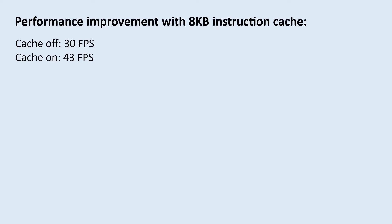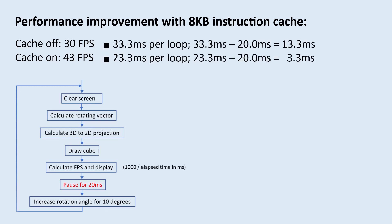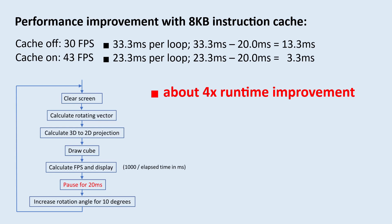Now we have two frames per second numbers: with the instruction cache off it's 30 FPS, and with it on it's 43 FPS. Before we just compare these two numbers, remember there is a 20-millisecond pause per frame that we need to subtract when evaluating the runtime. After that correction, for this trial run it's about a 4x runtime improvement with this 8 kilobytes of instruction cache implemented. Of course this is just one case, and the improvement can depend on a lot of things, but I think the result serves the purpose of this experiment and I'm happy with it.